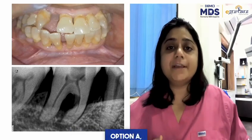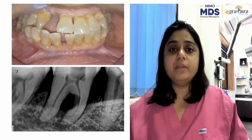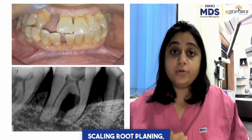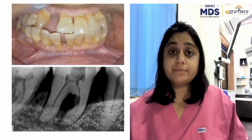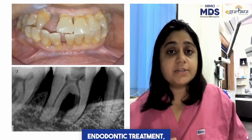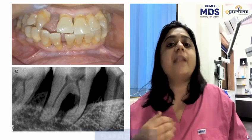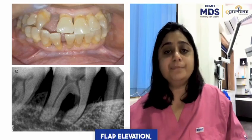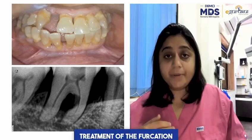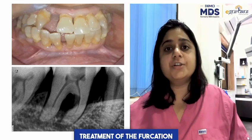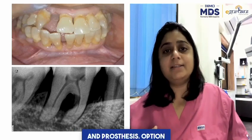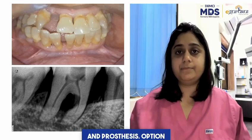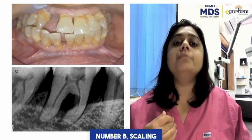Option A: scaling root planing, endodontic treatment, flap elevation, treatment of the furcation, and prosthesis.